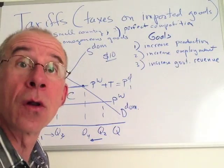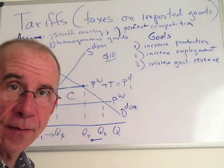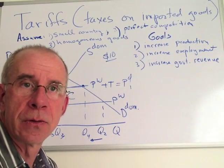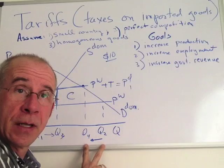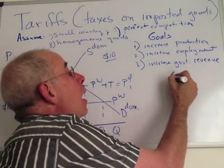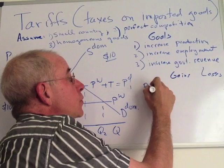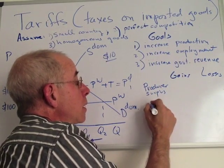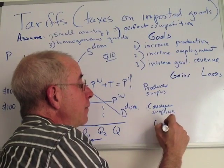At first blush, we've really met all of the goals we were trying to meet: we've increased domestic production, likely increased domestic employment, and we've had an increase in government revenue. What economic analysis is designed to do is look beyond that simple, superficial effect and examine secondary effects. We've already hinted at one — there's a decrease in domestic consumption associated with the higher price. We'll look at gains and losses: producer surplus gains, consumer surplus losses, and the impact on government revenue.